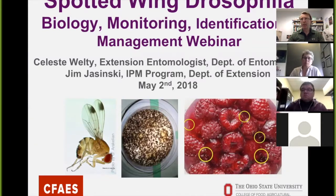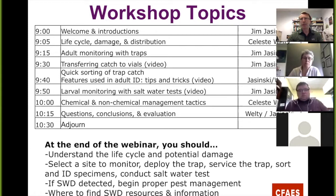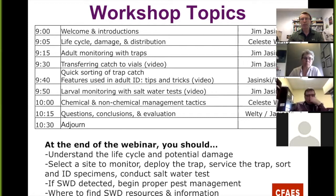So we sort of went over this already — this was just the basics of Celeste and I talking about the biology, monitoring, identification, and management of spotted wing drosophila. These are the topics we're going to cover today: a brief welcome and introductions, which we've done already. Celeste will then start with the life cycle, damage, and distribution. I'll take over talking about monitoring and taking the contents of the trap into vials. Then we'll talk about sorting and identification, larval monitoring using saltwater tests. Celeste will then talk about chemical and non-chemical management options, and we'll end with questions and conclusions.